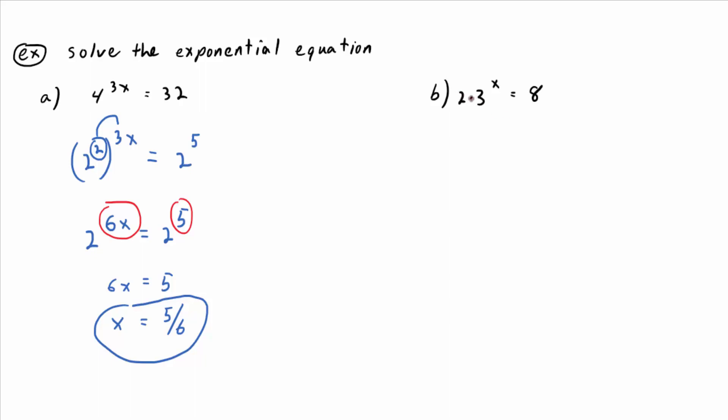So we have 2 attached by multiplication. How do I get it to the other side? So I'm going to do that first. So isolate the exponential function, get 3 to the x equals 4.